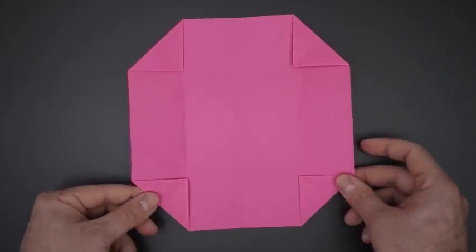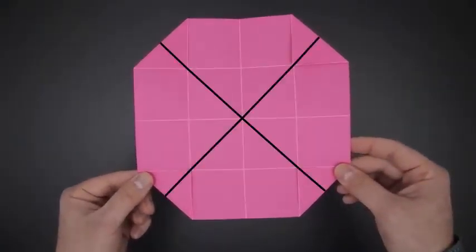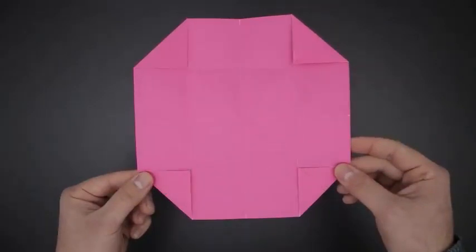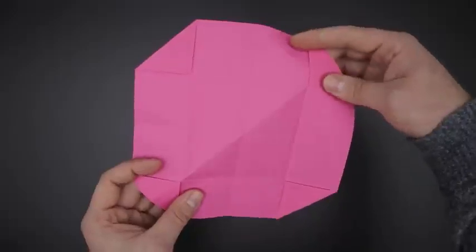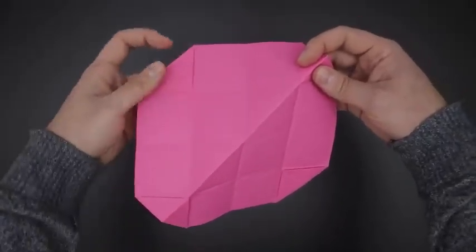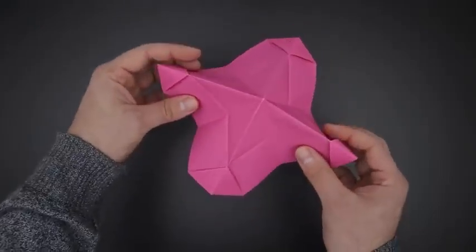Now pay close attention to the next step. We will need to close the paper using these four diagonal folds. To make it easier you can close the corners first, like this. Then just bring the four sides to the middle.